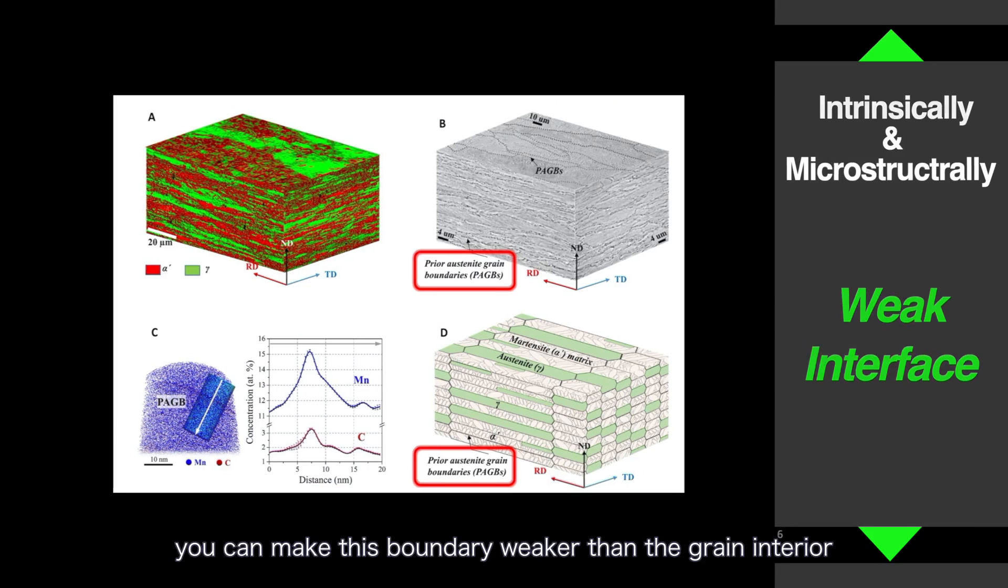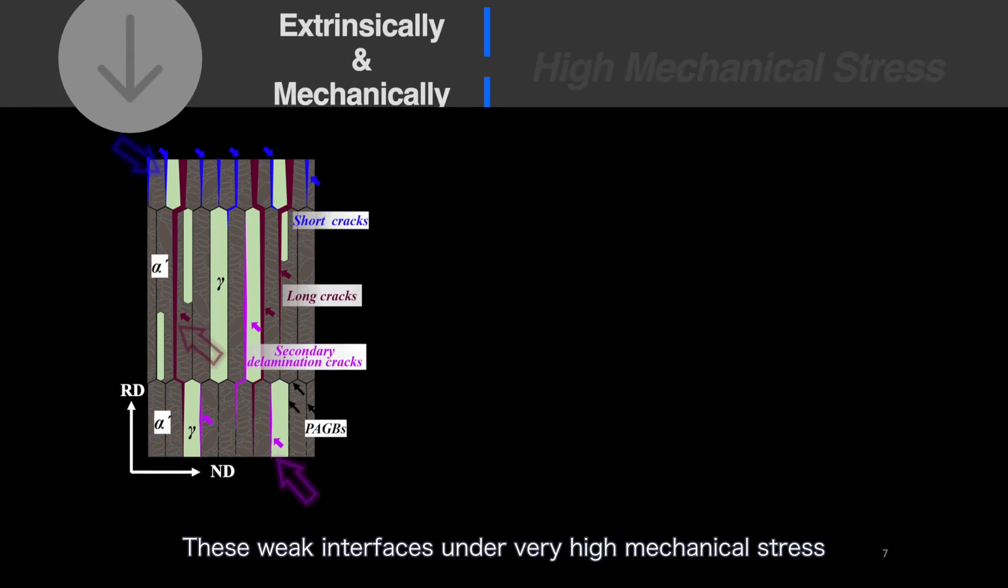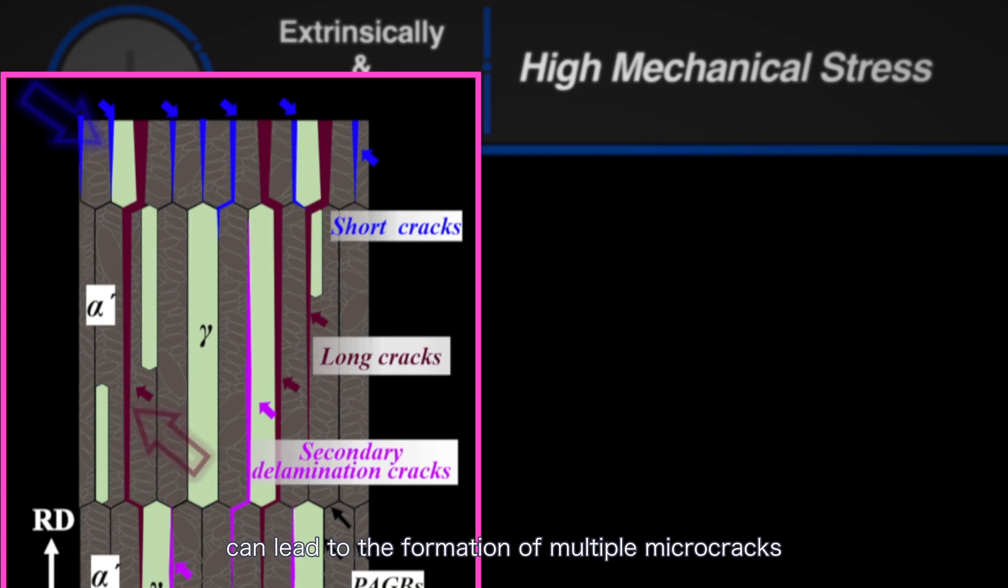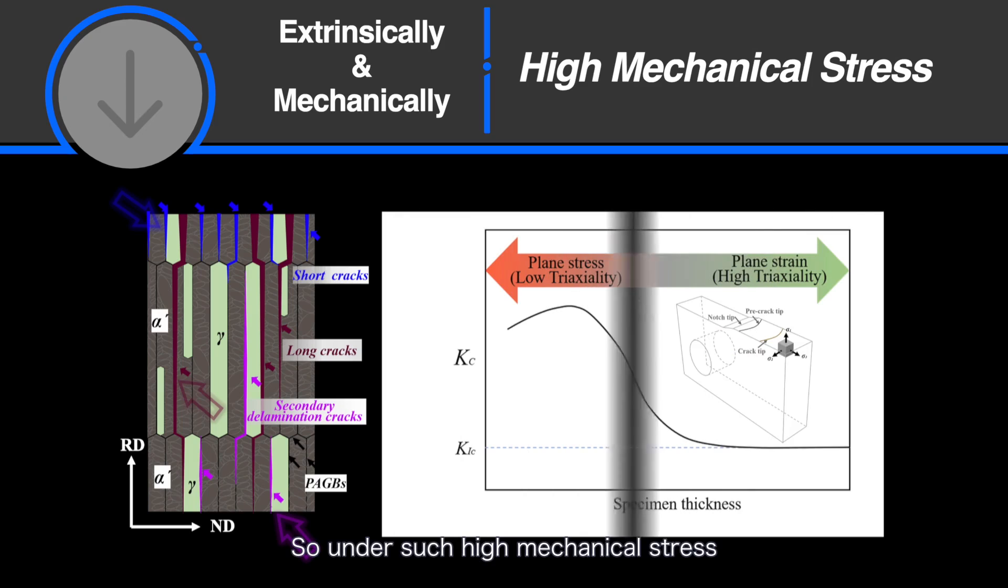You can make this boundary weaker than the grain interior. The weak interfaces under very high mechanical stress can lead to the formation of multi-micro-cracks. Under such high mechanical stress, multi-delamination can take place.